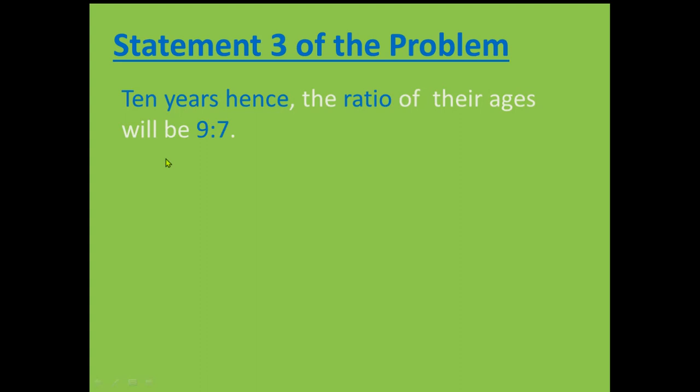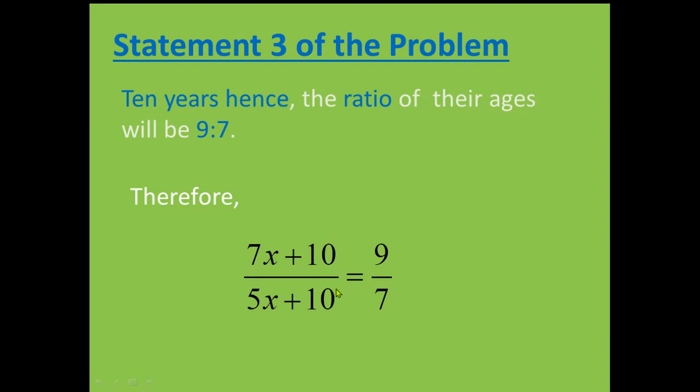Now let us look at statement 3 of the problem: 10 years hence, the ratio of the ages will be 9 is to 7. So we are also given the ratio after 10 years in numerical form, and it is given to be 9 is to 7. But we have found the ratio in variable form as 7X plus 10 over 5X plus 10. So both these ratios will be equal. So we have equated these two ratios and we get 7X plus 10 over 5X plus 10 is equal to 9 over 7. So here we get our equation.